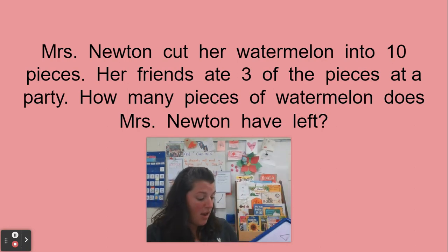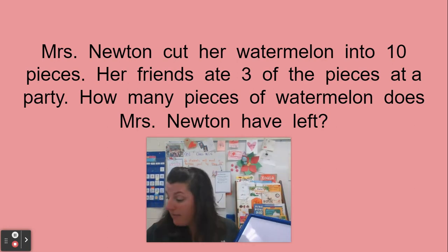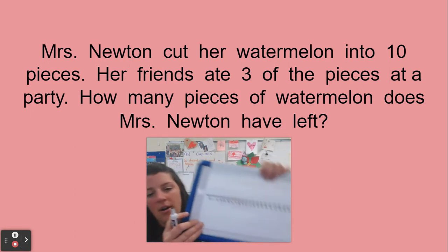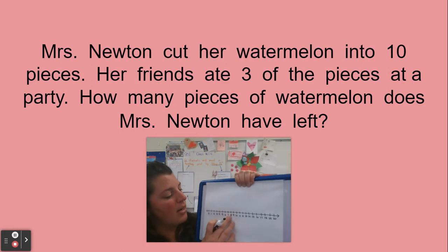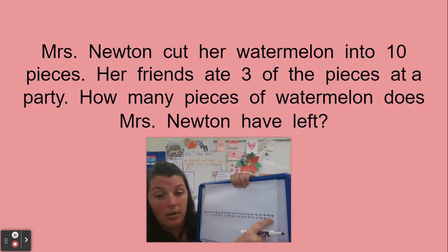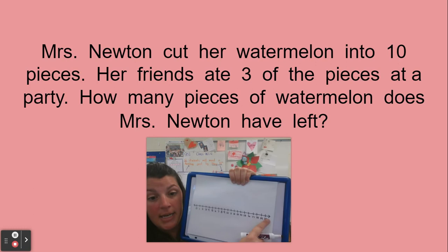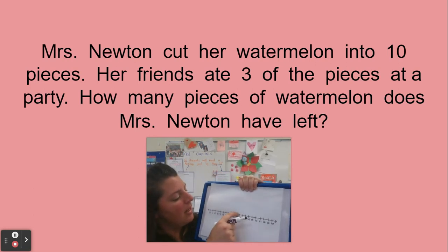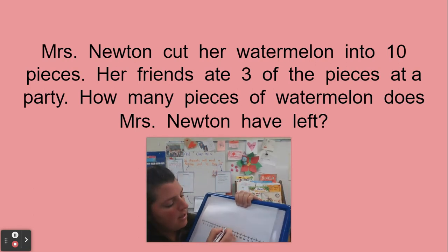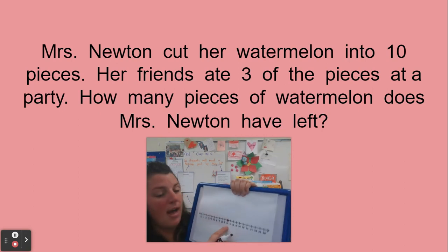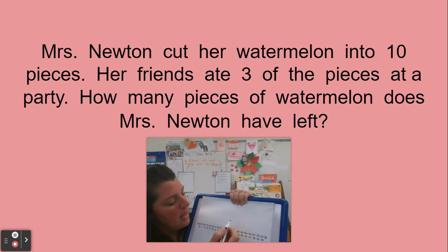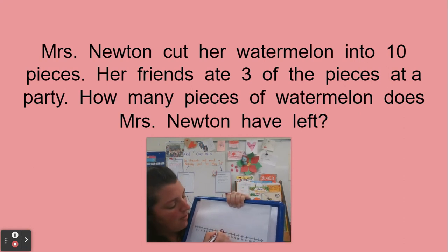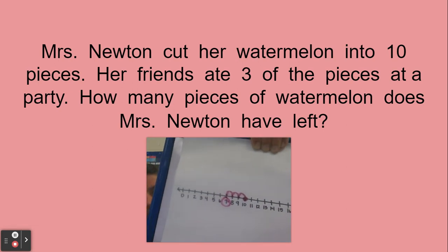Someone else even remembered we could use our number line. Remember when we learned to use our number line with subtraction — instead of the number getting bigger when we're adding, we go the other way. Our number was getting smaller. So I'm starting here at 10 because Mrs. Newton had 10 pieces of watermelon. Her friends ate three pieces, so I have to jump back one, two, three to the number seven.